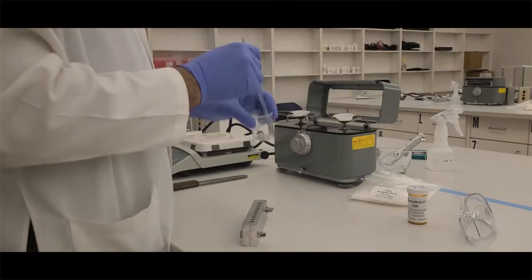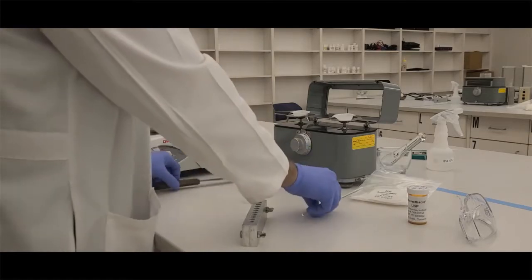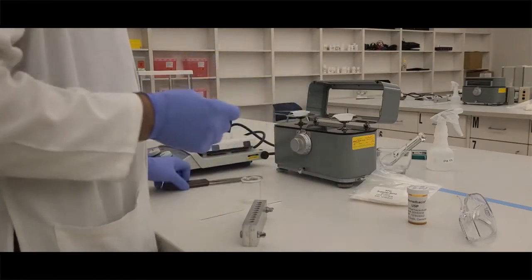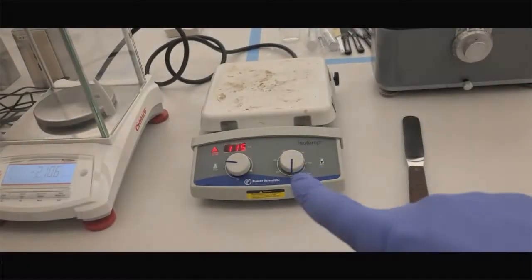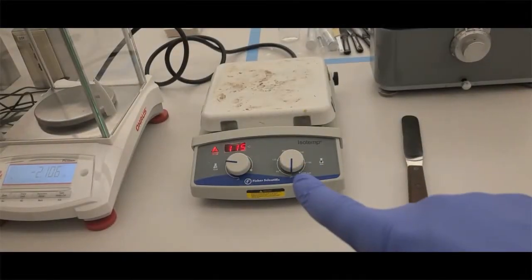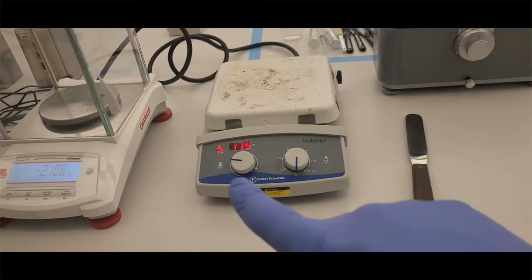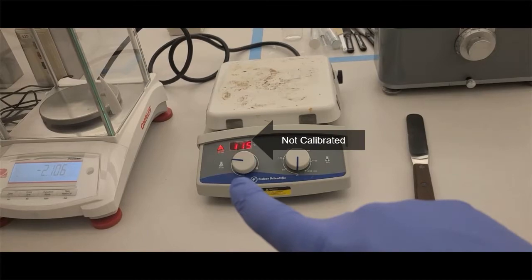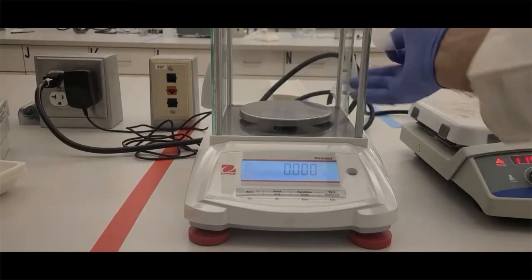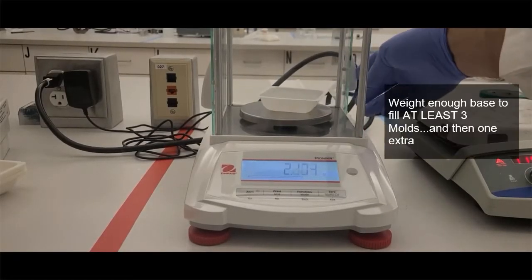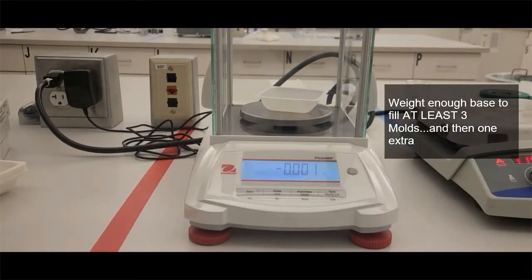You also need a glass beaker and a stir rod. The smaller the beaker, the less waste you'll have. You also need a metal spatula—make sure it's metal. Our hot plate is another item we need. Some hot plates have two knobs: one for heat, one for the stirrer. We only need the heat. The calibration is not accurate, so don't use them. Your instructor will tell you the temperature to use.